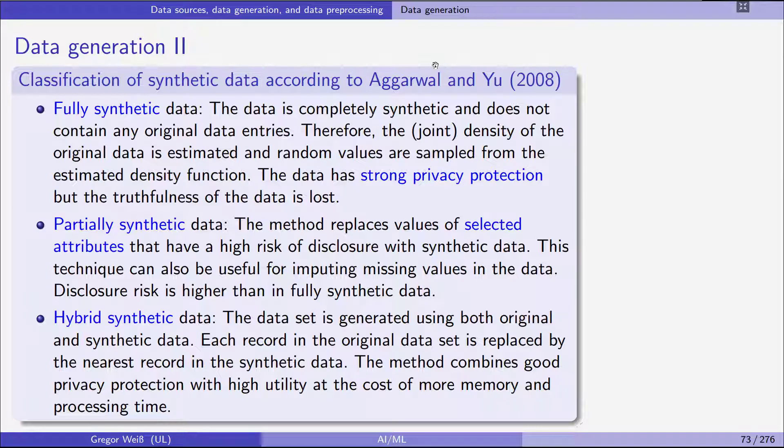Thus, the joint density of the original data is estimated, and we sample random variables from the estimated density function. So in other words, we are only taking the original data, fitting a statistical distribution to the data, and then sampling synthetic data from that fitted statistical distribution. In this case, the data has strong privacy protection, but the truthfulness of the data is obviously lost because it's fully synthetic.